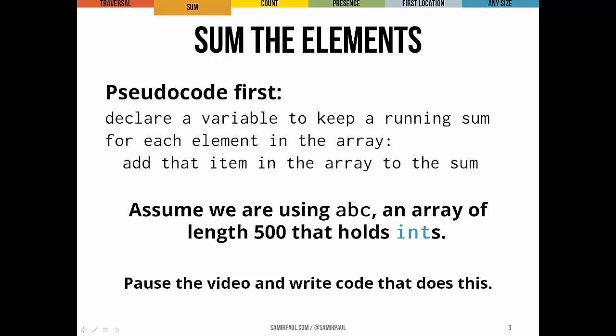So suppose we wanted to sum all the elements of an array. Each time through, the loop adds a different element to this running sum. So in the first iteration, we add ABC sub zero, and so on. So first, let's think about some pseudocode. We want to have a variable that keeps a running sum for us. And for each element in the array, all we want to do is add that to the running sum.